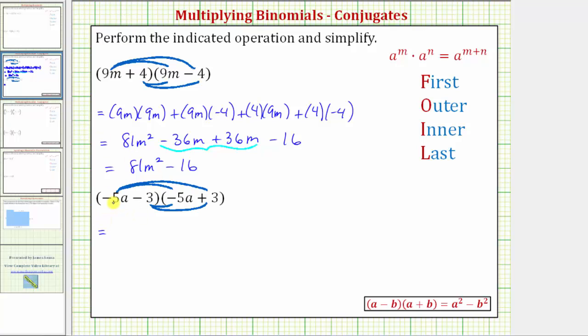So we have negative 5a times negative 5a, that's positive 25a squared. Then we have plus negative 5a times 3, that's negative 15a. Instead of plus negative 15a, let's just write minus 15a.